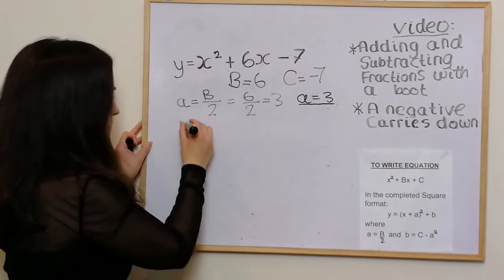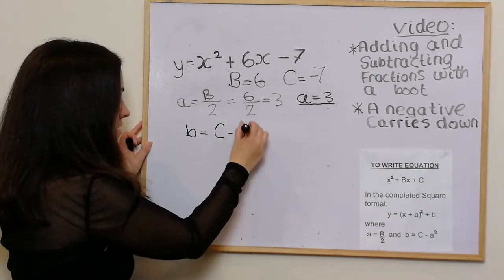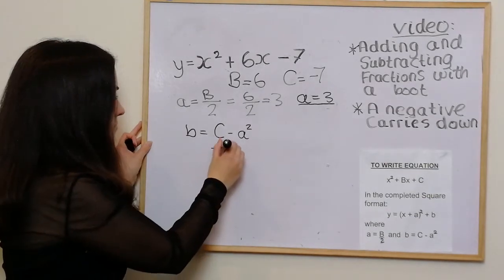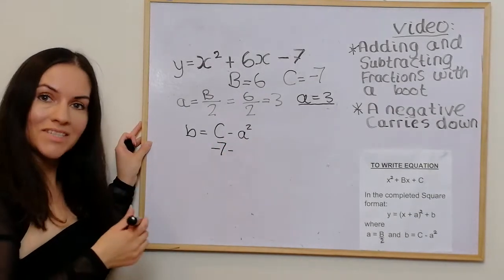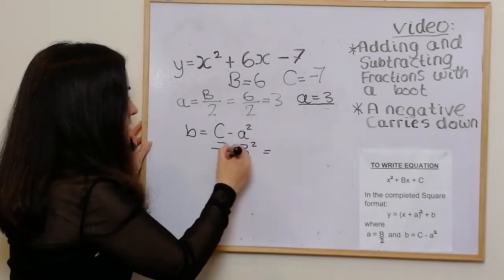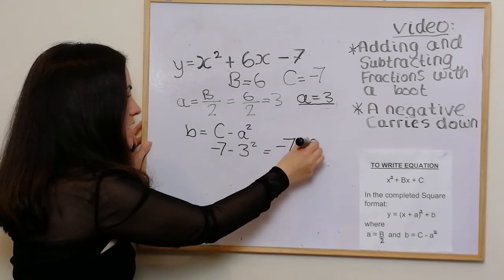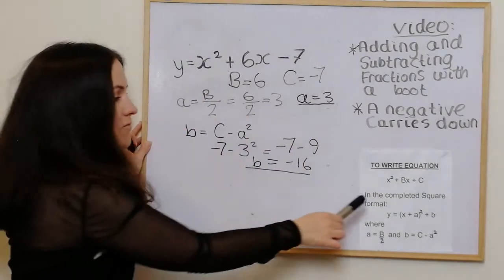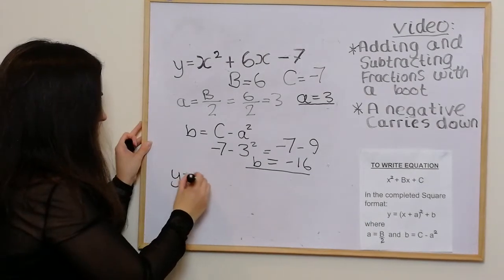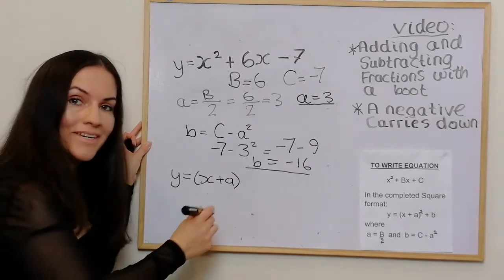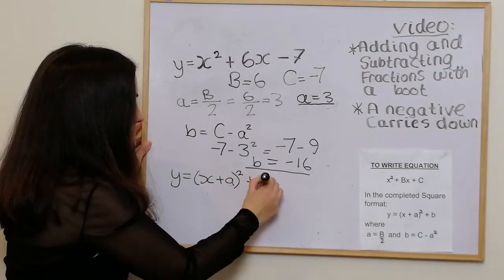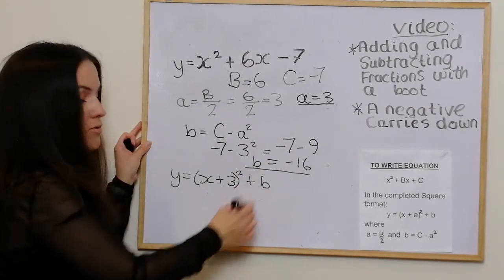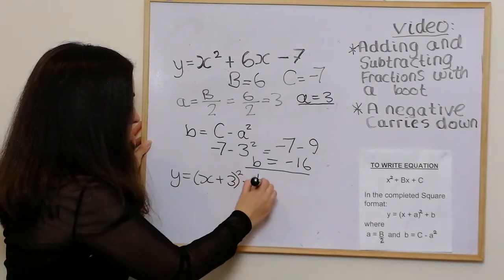To get the value of little b, we do c minus a squared. C is minus 7 and we take away a squared, which is 3 squared. So this becomes minus 7 take away 9, which is minus 16. So the value of b is minus 16. Putting it into the format y equals (x + a)² + b, the a value is 3 and the b value is minus 16. And that's the answer.